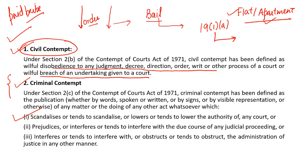That is why, even though Article 19(1)(a) guarantees the fundamental right of freedom of speech and expression, there is a restriction: contempt of court. You can say whatever you want, but you do not have the freedom to bring disrepute to the institutions of judiciary. Committing contempt of court is not part of your freedom of speech and expression.